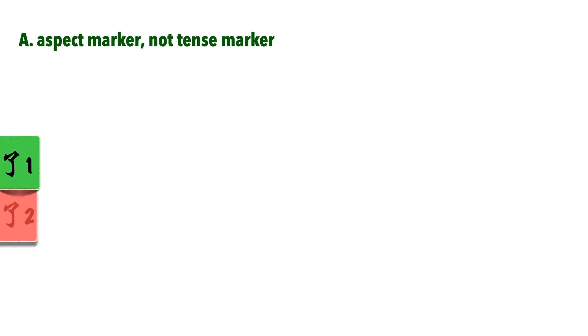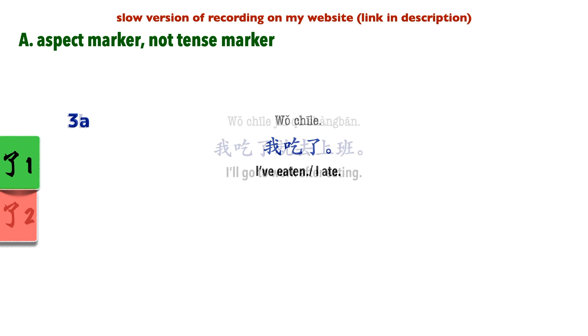Aspect marker, not tense marker. Let's look at this sentence: 我去了. Now, you probably are thinking that this clearly is past tense, but I'm not quite done with explaining yet. Completion of an action does not mean that it is in the past. We have to think of it within the context of the sentence. Let's look at the next one: 我吃了就去上班. As I said, completion does not mean that it has happened. It simply means what it means, completion.